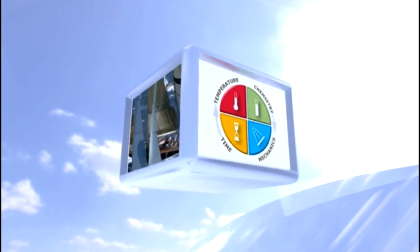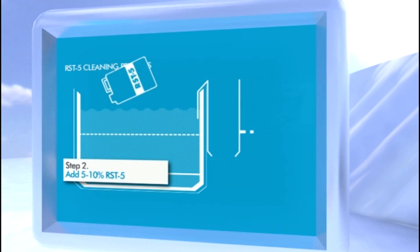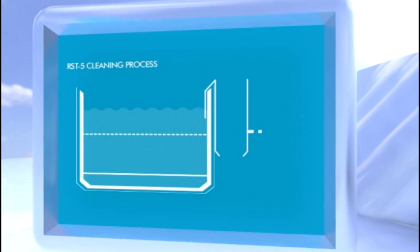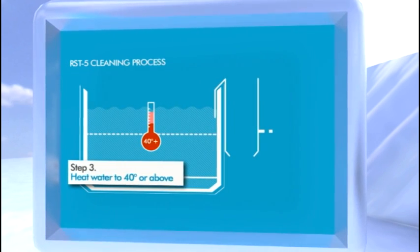Let's take a closer look at how it works. First, fill with ordinary tap water. Add 5 to 10% RST5, depending on the substance being removed. Heat the water to invigorate the power of RST5.